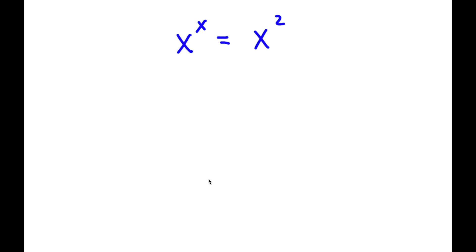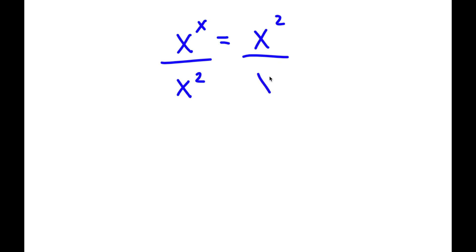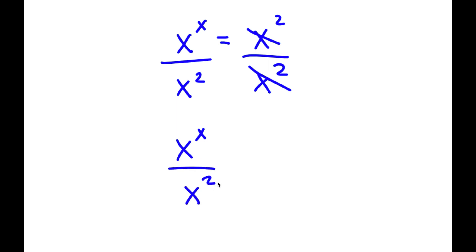In this problem, I have x to the power of x is equal to x to the power of 2. To solve this, the first thing I'm going to do is divide both sides by x to the power of 2. So then these two cancel out, and I'm going to be left with x to the power of x over x to the power of 2 is equal to 1.